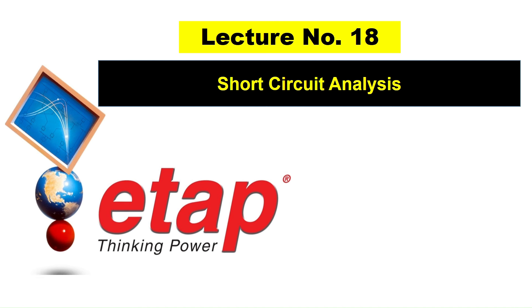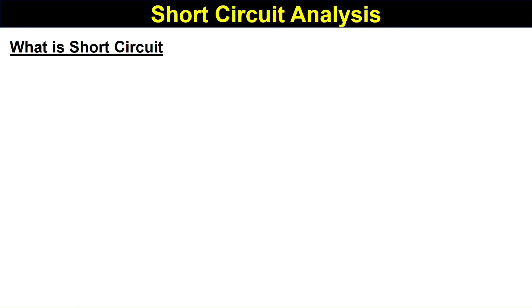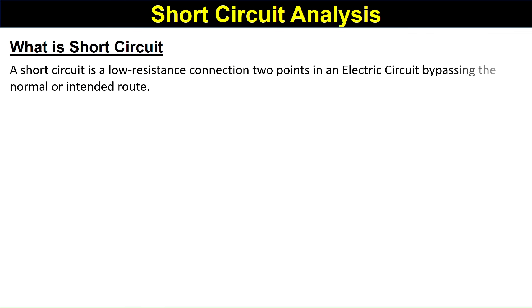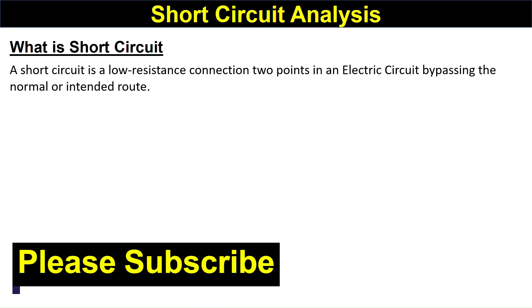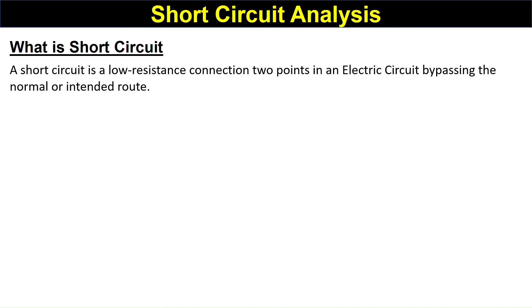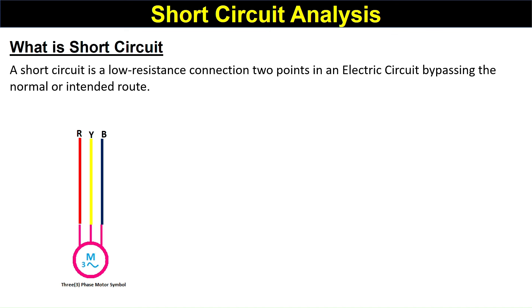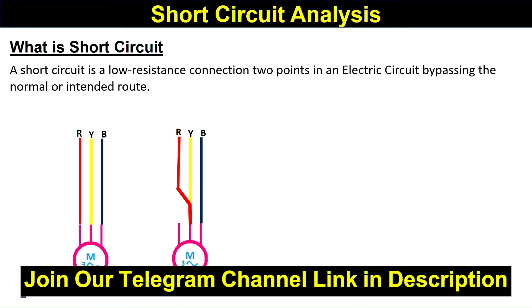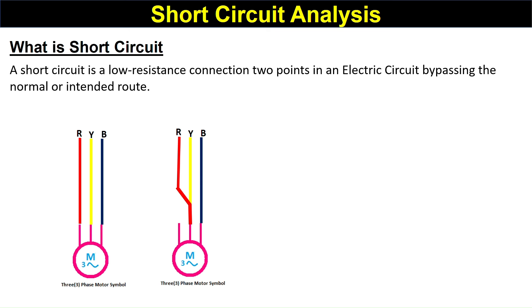First, let's see what a short circuit is. A short circuit is a low resistance connection between two points in an electrical circuit, bypassing the normal or intended path. For example, consider a three-phase R-Y-B supply feeding a motor under normal conditions. If the R phase gets connected with the Y phase, that is a short circuit — a path that is not the normal path.